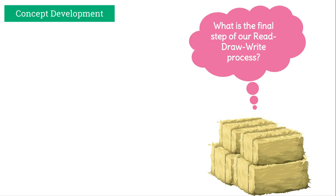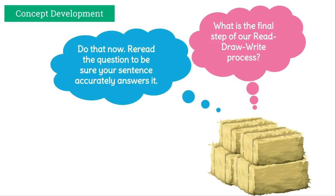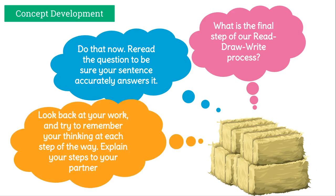You may be thinking you've got your number and you're done — wrong. You need to reread the question and write a sentence. You've got to put this in sentence form, and be sure that your sentence accurately answers the question. When you're done, look back at your work and try to remember your thinking at each step. Then explain your steps to your partner: how you thought about the question, what diagram you drew, what equation you wrote, and the sentence you used to explain your answer. Go ahead and pause the video and do that now.